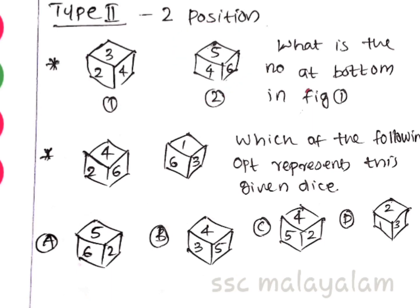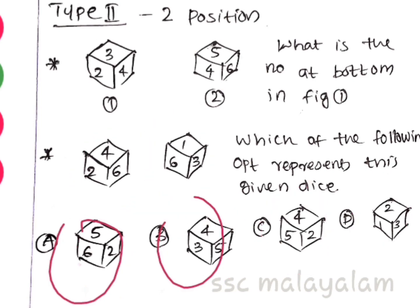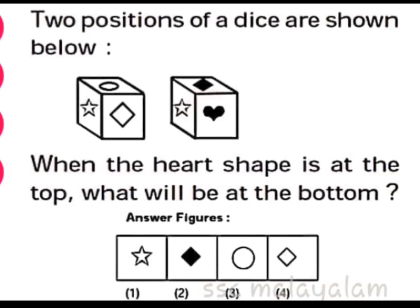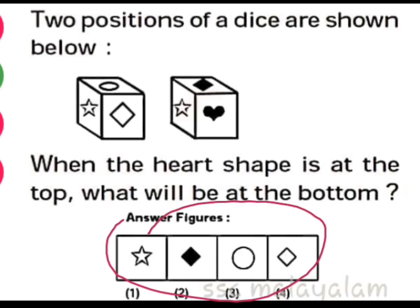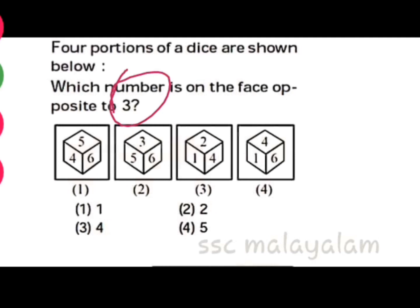We are going to call this figure one. We have a question: if you want to find out the opposite of 3, you can work it out. The next type is a question. Let's look at the top and opposite. The top is not the bottom; the top is not the opposite. These are the options: 1 to 4, 2 to 4. The opposite number of 3 is the question.